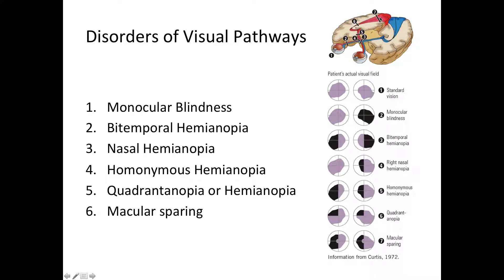Number two is a lesion of the optic nerve, three and four are specific lesions of the chiasm, five is a lesion of the optic tract, and there are also cortical lesions. The conditions we'll cover are: monocular blindness, bitemporal hemianopia, nasal hemianopia, homonymous hemianopia, quadrantanopia, macular sparing, and scotomas.